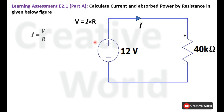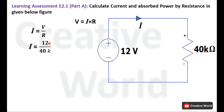From this equation we can calculate I, because voltage and resistance are given. So the value of I will be V divided by R. Enter the values of voltage and resistance into the equation and calculate the current, which is 0.3 milliampere.